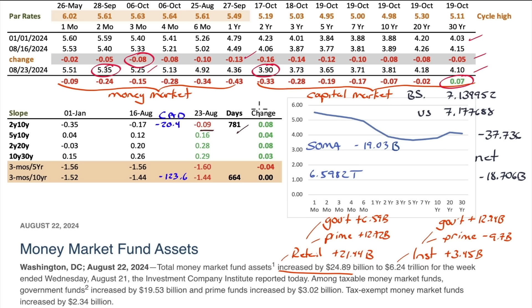Curve inversion is almost gone — nine basis points in the capital market. That's the only inverted curve: the 2-to-10, nine basis points, 781 days. I wonder if we'll break 800 days — 19 more days to go. I think the market this coming week will reflect on what they did Friday and think this is a 25 basis point Fed, not a 50 basis point Fed for September. They'll start to back out some of these cuts into the end of the year, so I think we'll be inverted for a little while longer.